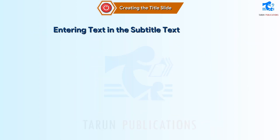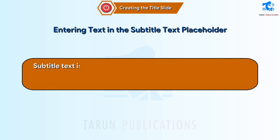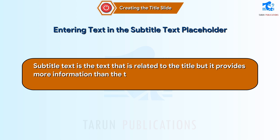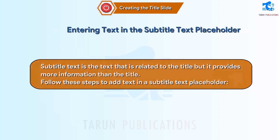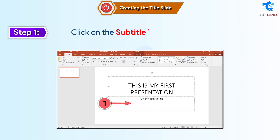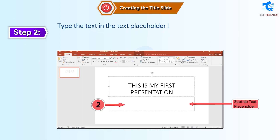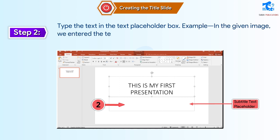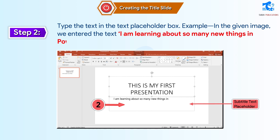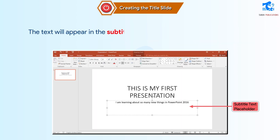Entering text in the Subtitle Text Placeholder. Subtitle text is text that is related to the title but provides more information than the title. Follow these steps to add text in a Subtitle Text Placeholder. Step 1: Click on the Subtitle Text Placeholder box. Step 2: Type the text in the Text Placeholder box. For example, we entered the text 'I am learning about so many new things in PowerPoint 2016.' The text will appear in the Subtitle Text Placeholder and the Slides tab as well.